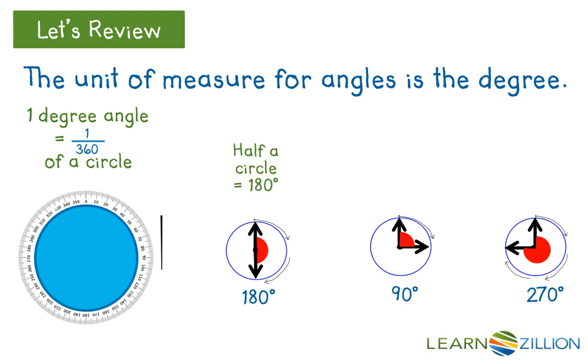We also have some benchmark angles that are important to remember. Half of a circle is 180 degrees, a quarter of a circle is 90 degrees, and three-quarters of a circle measures 270 degrees.